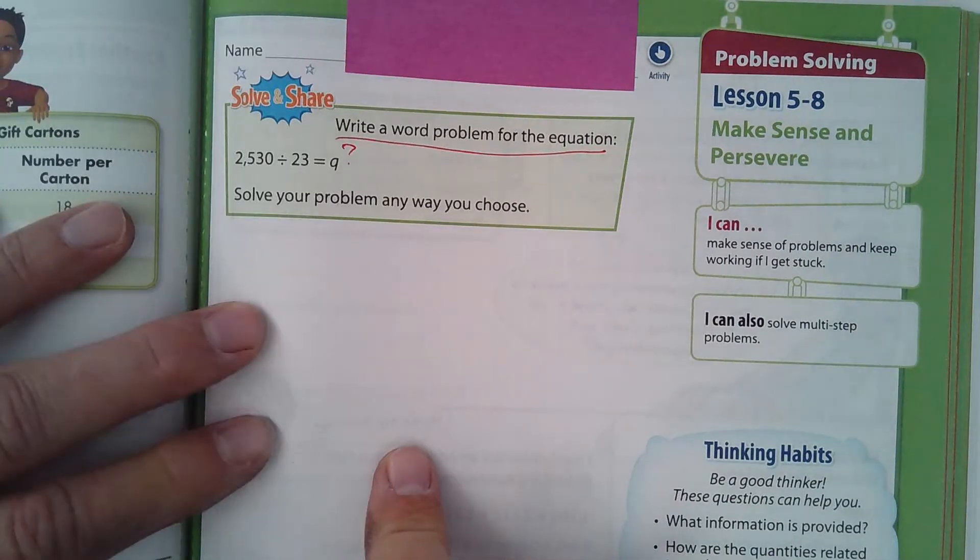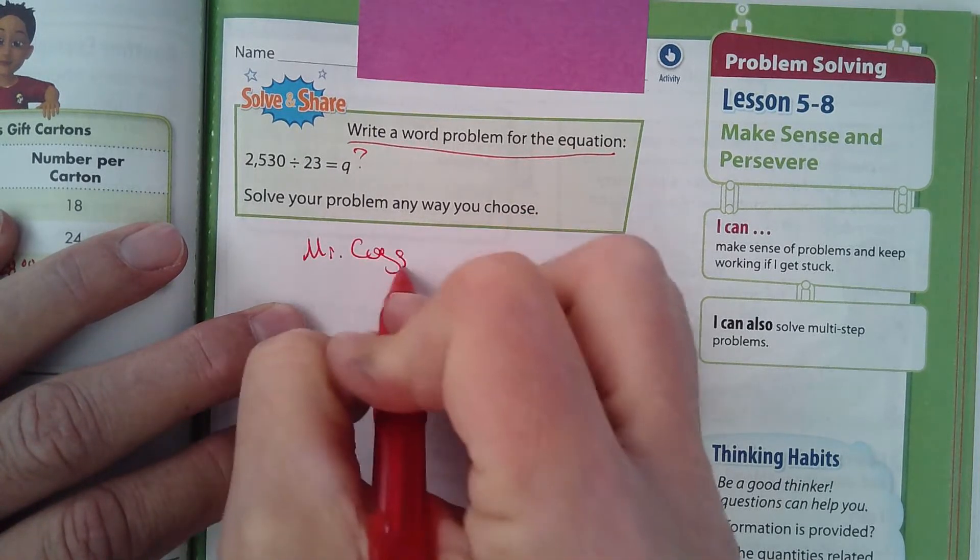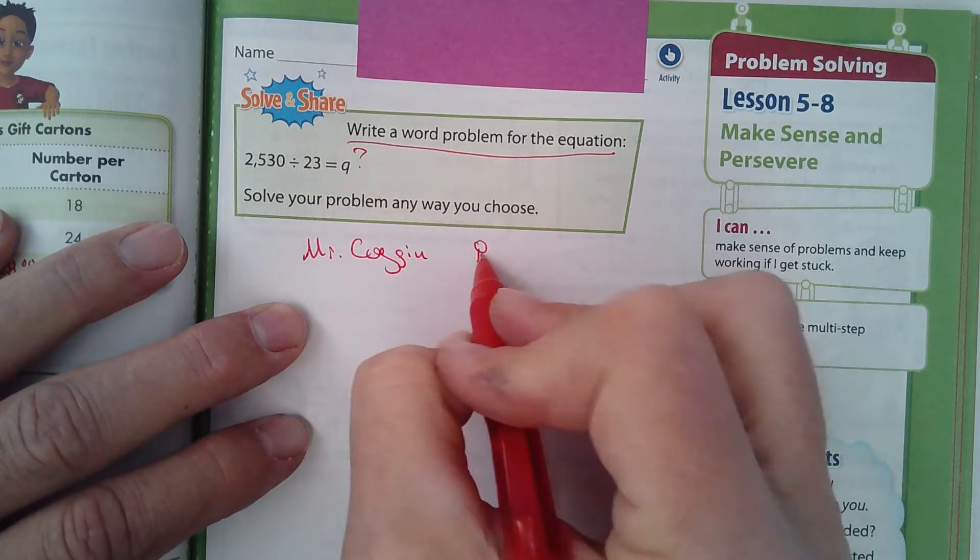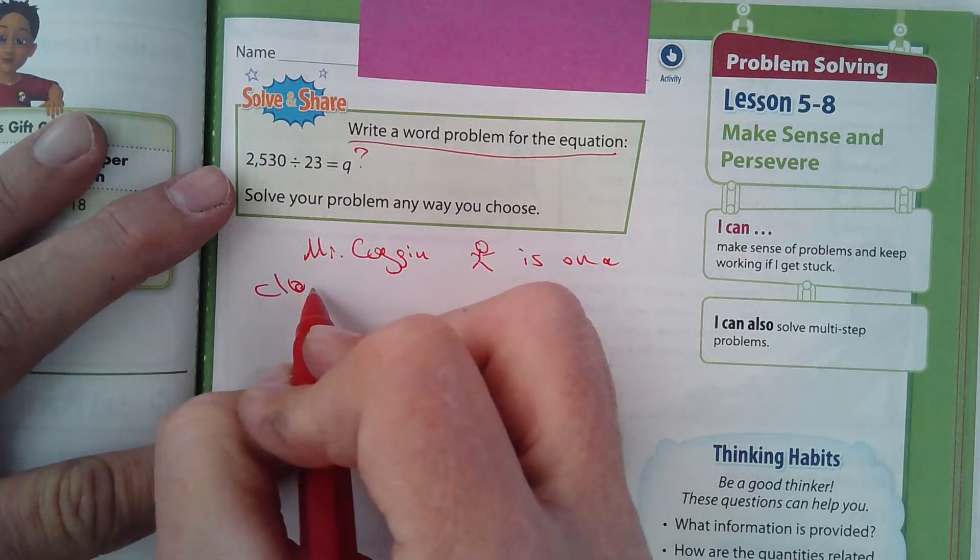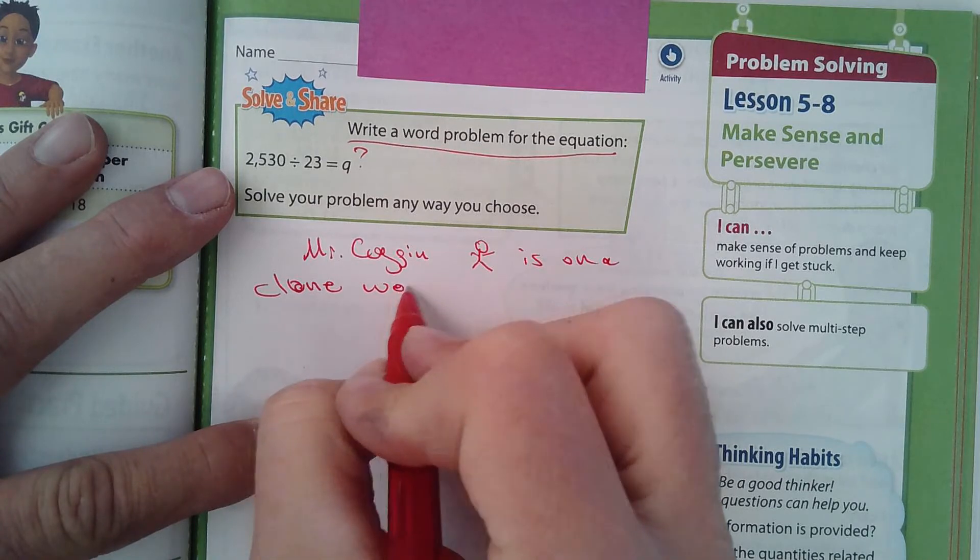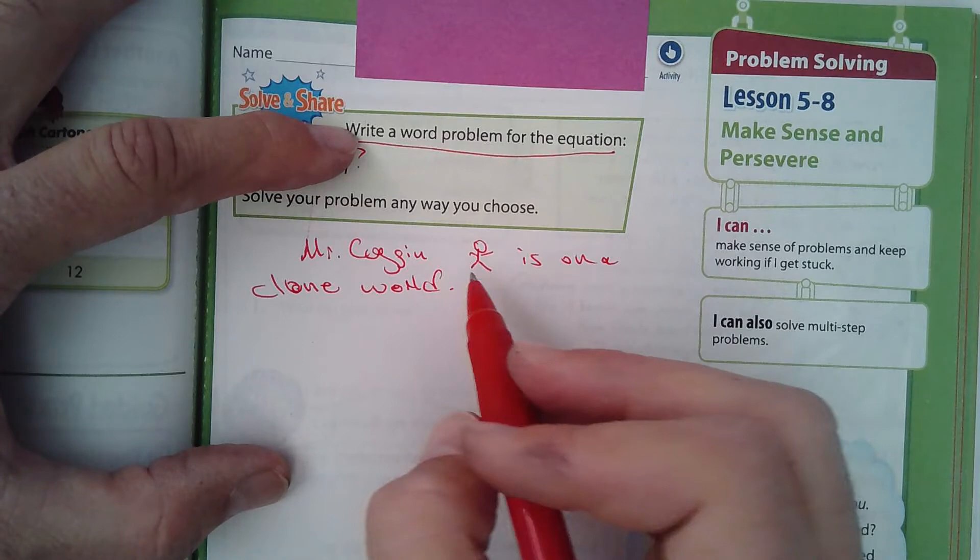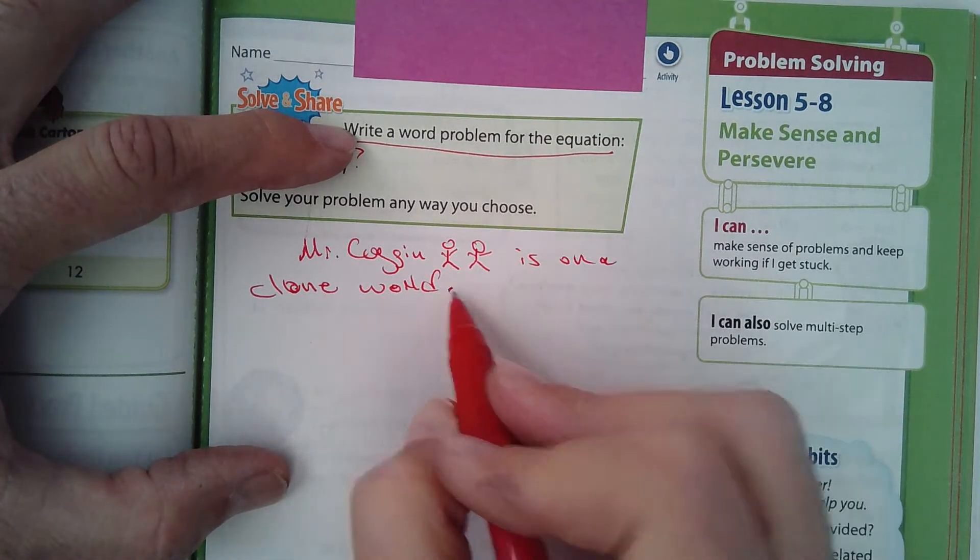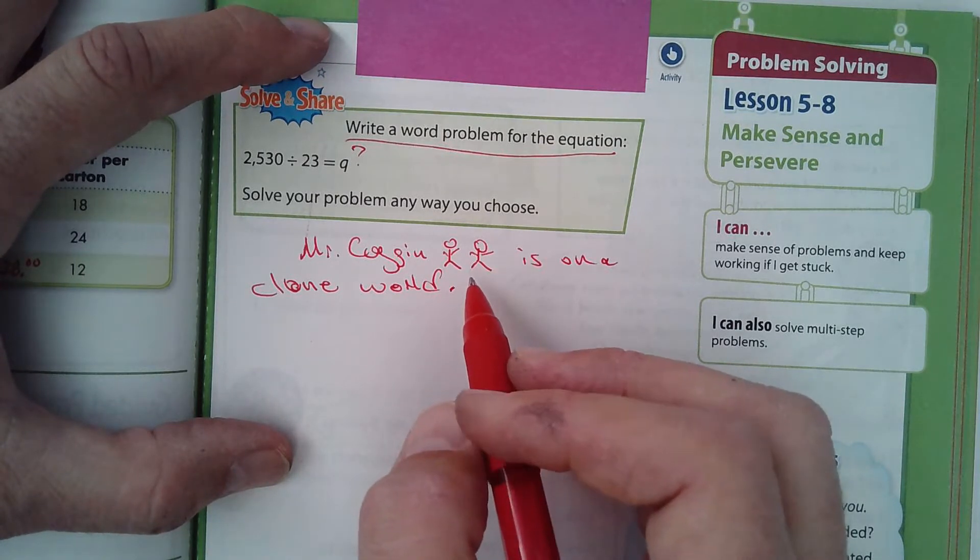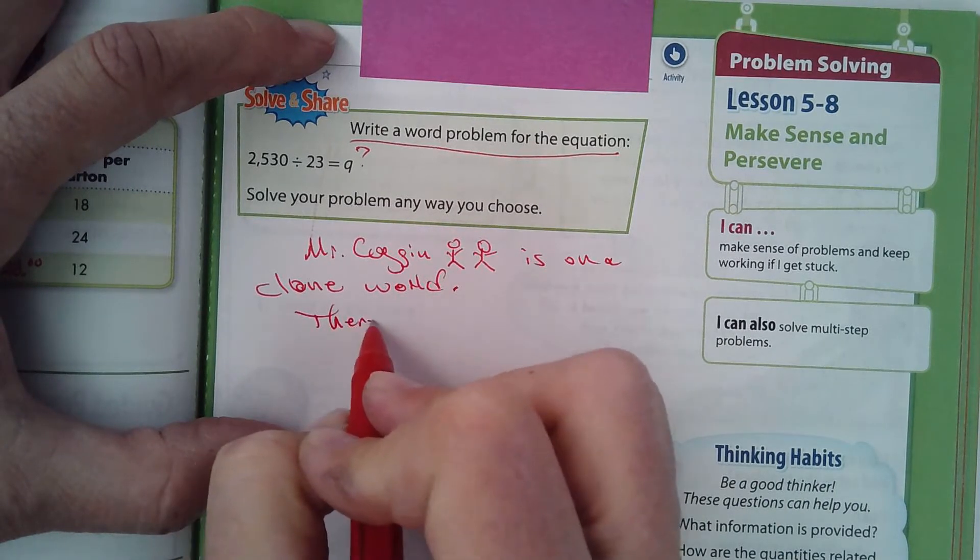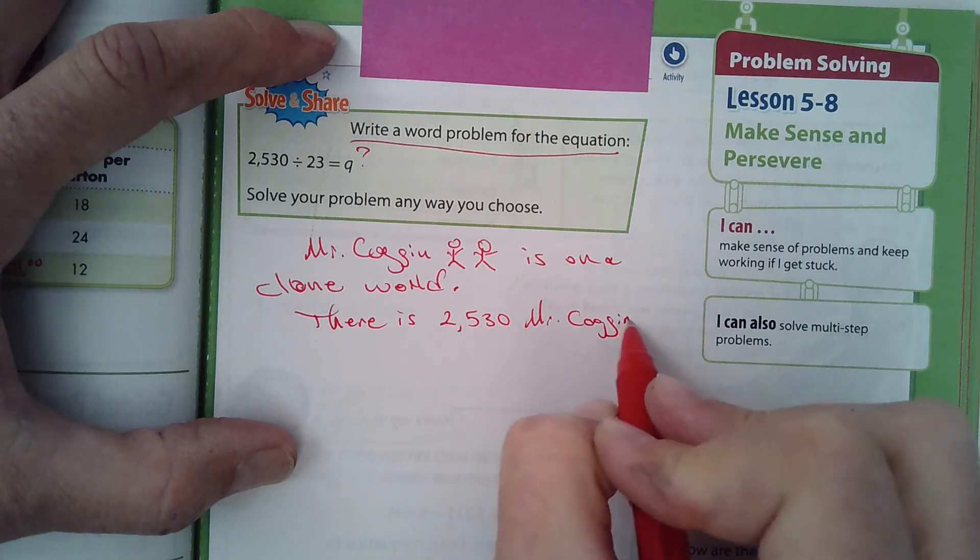So let's say Mr. Coggin is on a clone world. I'll explain. Clone world. A clone is something identical to something else. So if there was a clone of Mr. Coggin, there would be two Mr. Coggins. Okay, so Mr. Coggin is on a clone world. But there's not two Mr. Coggins. There is 2,530 Mr. Coggins. That's a lot of Mr. Coggins.